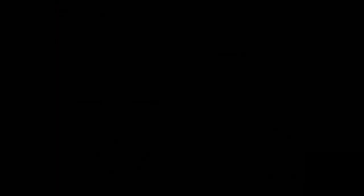These basic patterns of causal relationships, provided in the appendix of the book, are just an example of key elements that could be considered when defining your system description. We can have direct effects, indirect effects, and feedback effects, depending on your variables.